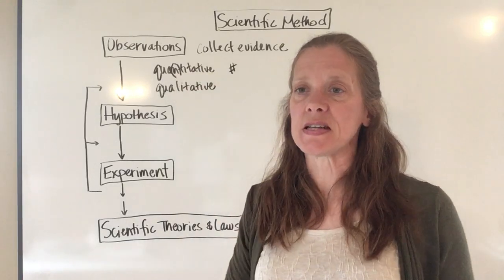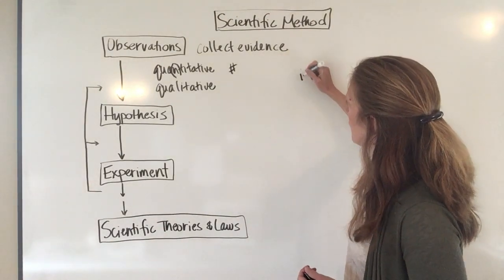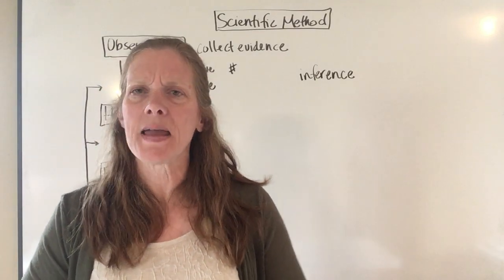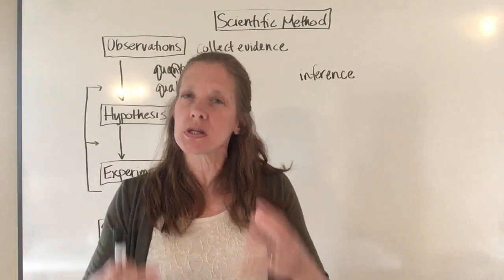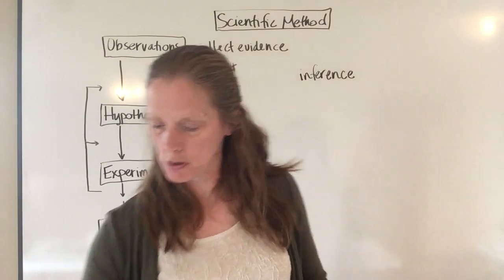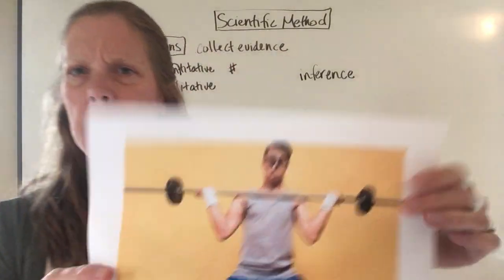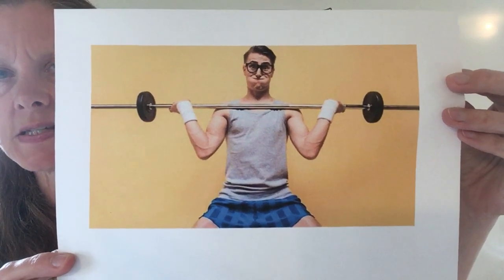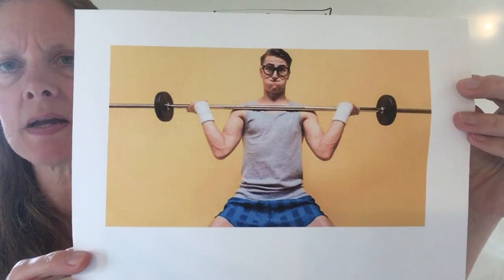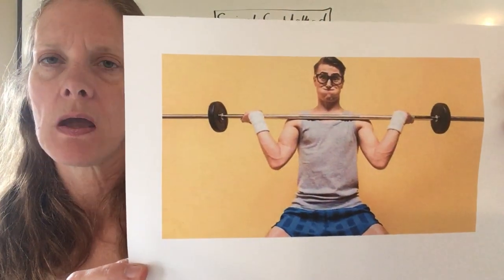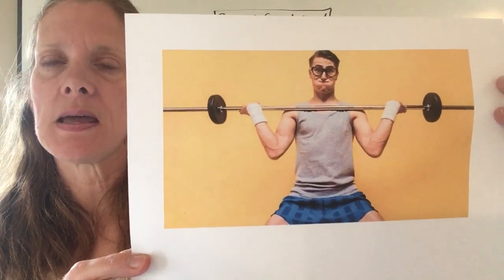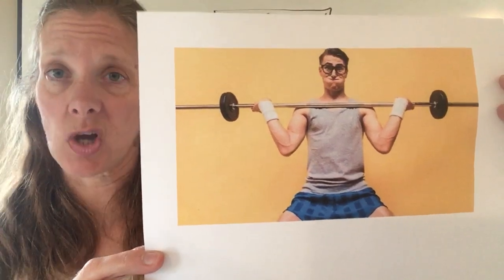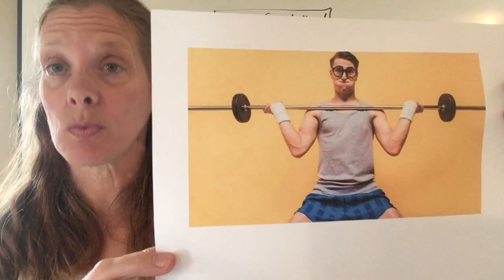An observation is different from an inference. An inference means you're making some sort of interpretation or assumption using the knowledge you have to make a judgment about something. I have a picture of a guy who is weightlifting. What observations could you make? Well, the guy is wearing glasses, he has a gray shirt on, he's wearing blue shorts, and he is lifting a barbell with weights on it — things you directly see with your eyes.